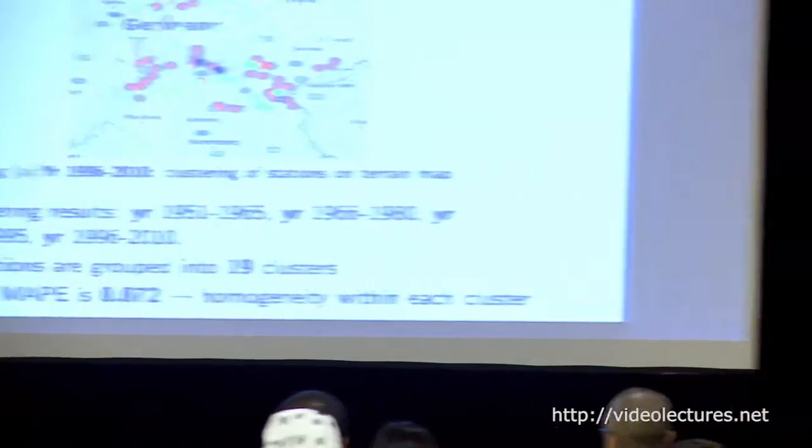Here is the clustering result. We generate four clustering results, each for a different time period. The most recent time period groups 167 climate stations into 19 clusters, each labeled by different colors. The largest MAPE among the four clustering results is quite small — 0.72 — showing the homogeneity of elements in the clusters. Remarkably, within each cluster, the elevation of climate stations is quite homogeneous. The yellow cluster is located below 300 feet, while the red cluster is near 550–600 feet, which makes sense because elevation is a key factor in determining local temperatures.